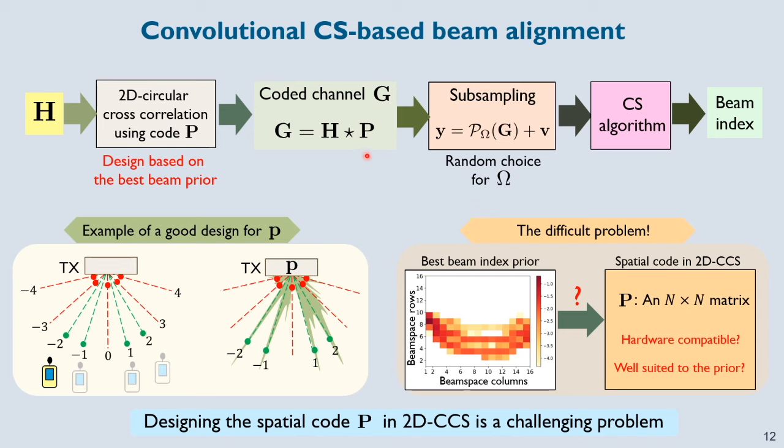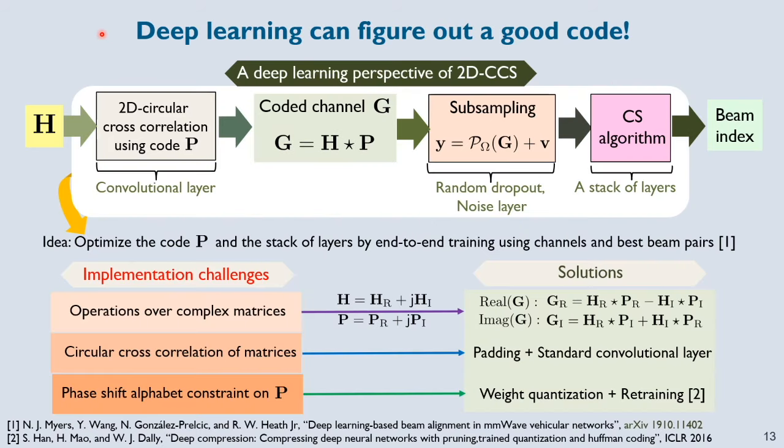Now a big question at this point is, how do we design the code P? For a simple linear array case where we had a uniform prior, the design of the code P was quite straightforward. We just needed a code P whose Fourier transform had equal magnitude at the four locations where the receiver was likely to be there. Now what about a complicated vehicular communication scenario whose best beam prior looks something like this? In this case, the design problem is to find a spatial code P which is a 2D matrix of size N x N such that its Fourier transform is well consistent with the beam prior shown here. Now this design problem is a challenging one because the spatial code must also be compatible with hardware.